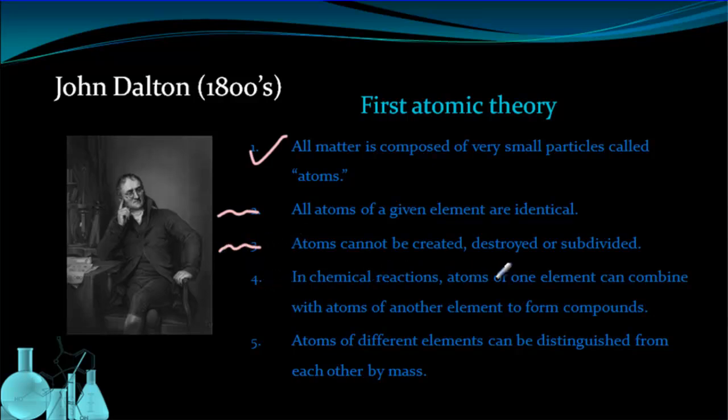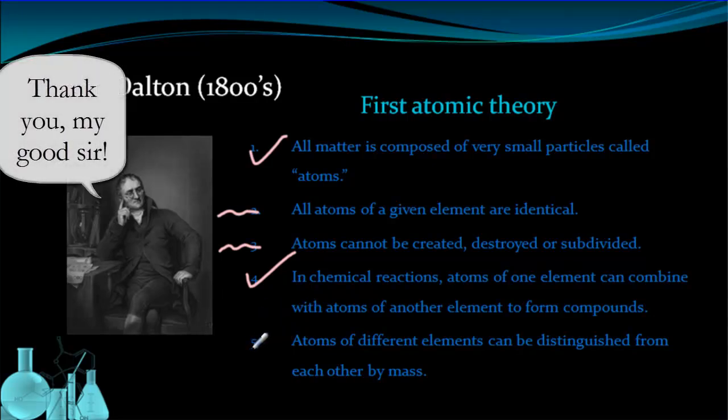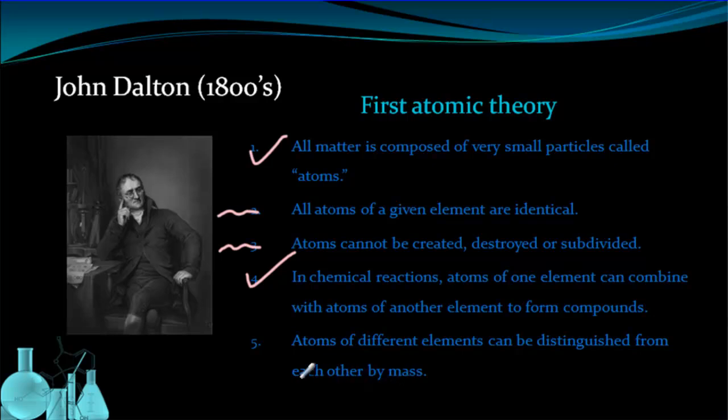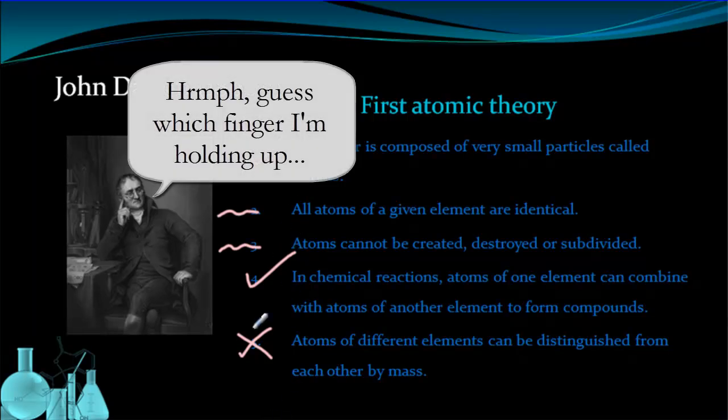Number four. In chemical reactions, atoms of one element can combine with atoms of another element to form compounds. Great. You got another one. Good job, Dalton. And in the last one, atoms of different elements can be distinguished from each other by mass. Now that is not true, okay? You did not really get that one correct, but he was close with that one as well. Not as close as the other two, but pretty close.